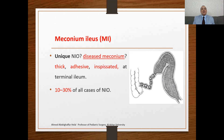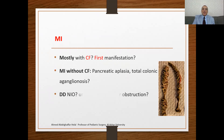Meconium ileus is a unique type of neonatal intestinal obstruction caused by the diseased meconium, in which the meconium is thick, adhesive, and inspissated, forming obstruction at the terminal ileum. It accounts for about 10 to 30% of all causes of neonatal intestinal obstruction. Meconium ileus is mostly associated with cystic fibrosis, and it may be the first manifestation of cystic fibrosis — we can say that meconium ileus is pathognomonic for cystic fibrosis. Meconium ileus without cystic fibrosis may happen; however, it is very rare, in certain cases of pancreatic aplasia and total colonic aganglionosis.